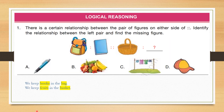First section is logical reasoning. Question number 1: There is a certain relationship between the pair of figures on either side of double columns. Identify the relationship between the left pair and find the missing figure. On the left side there is a bag and a book — we keep books in the bag. On the right side there is a basket — we keep foods in the basket. So the correct answer is foods, option B.